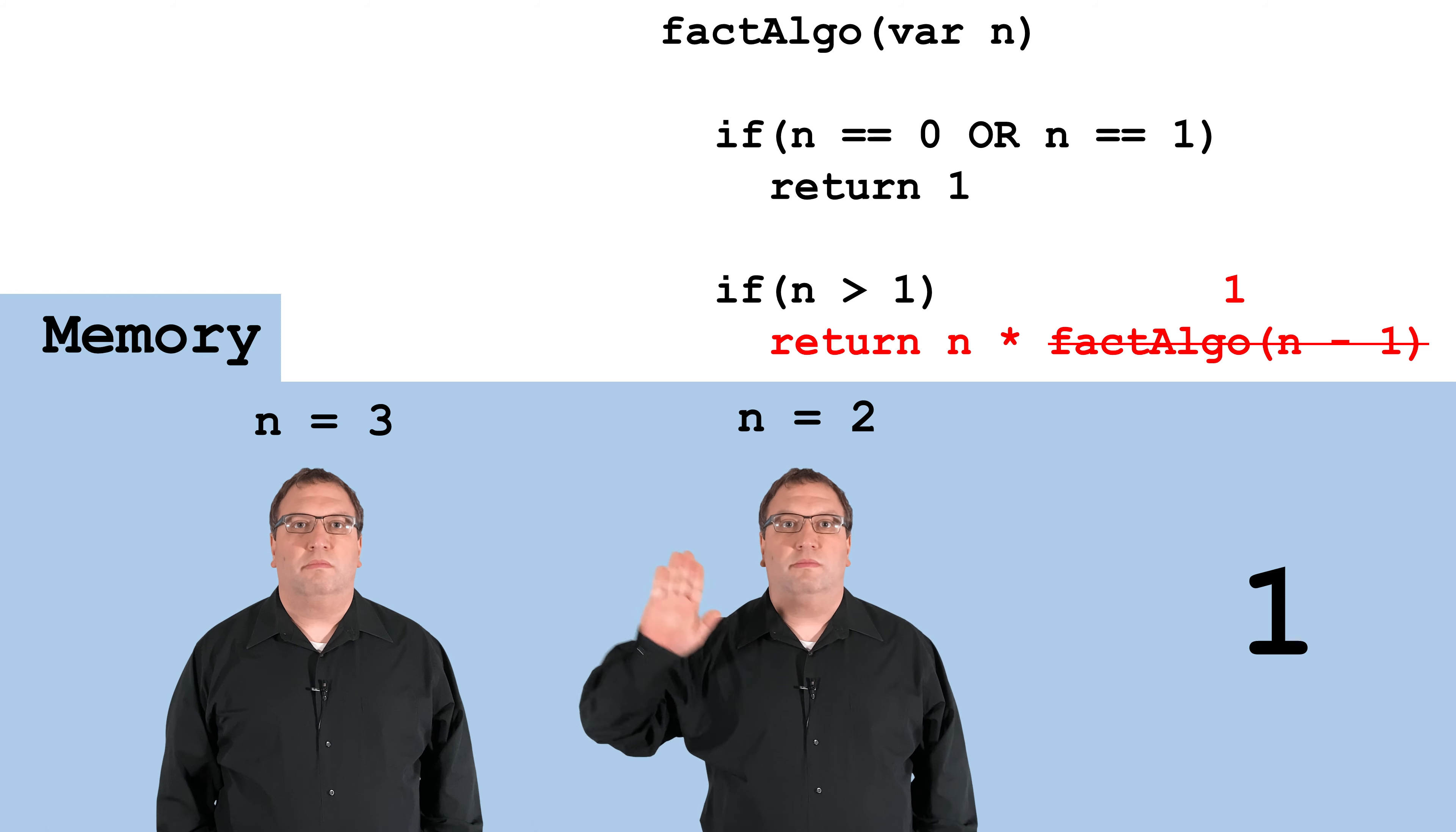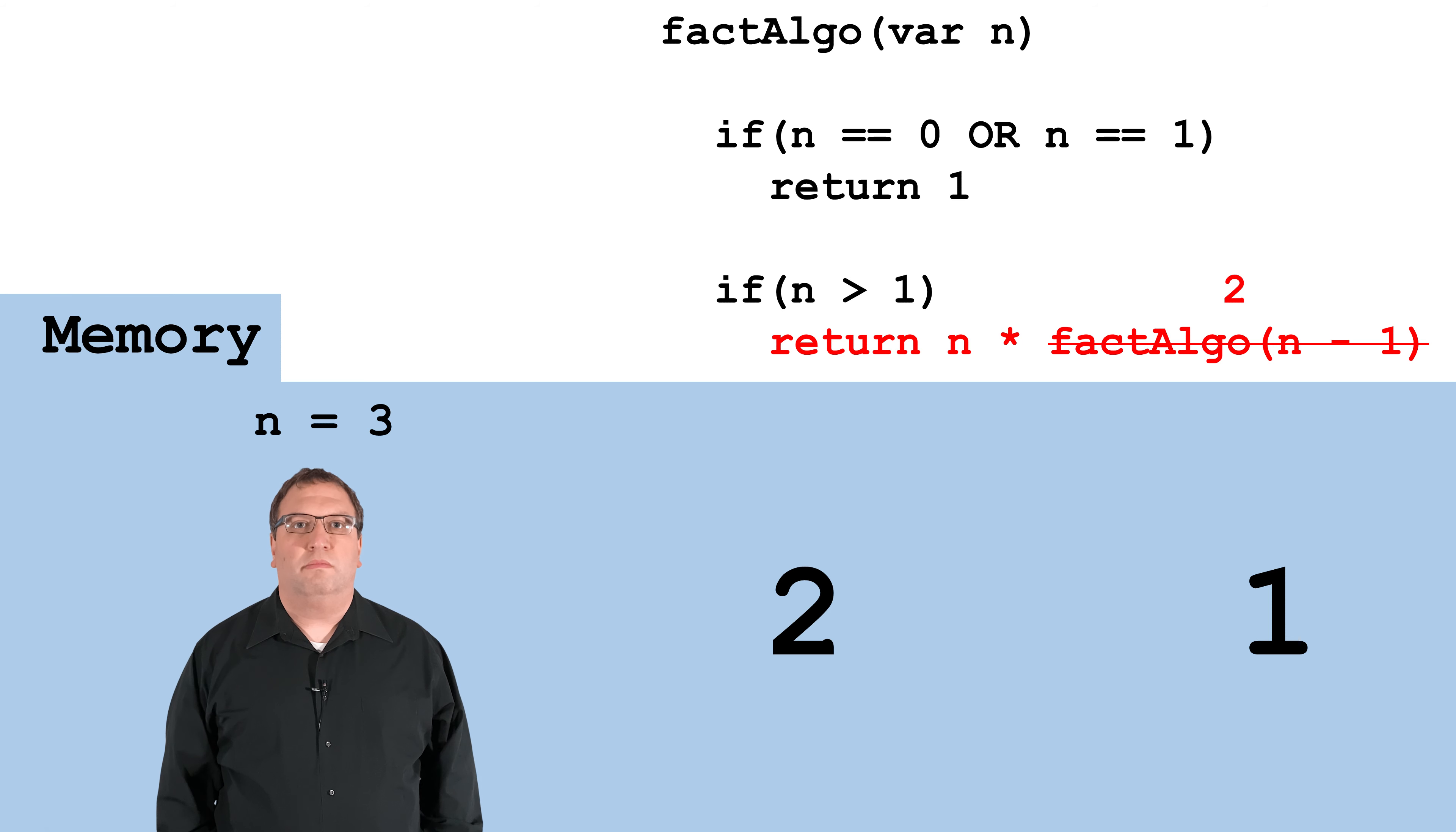Now I know that 1 factorial is 1, so I can multiply it by my n, which is 2. 2 times 1 is 2, so I'm going to return 2.